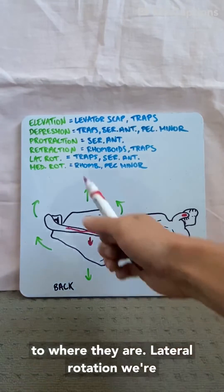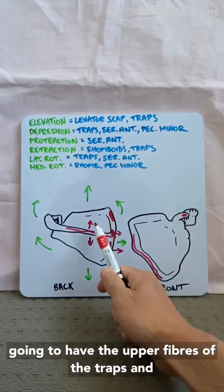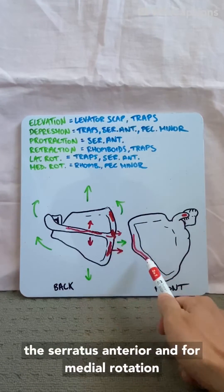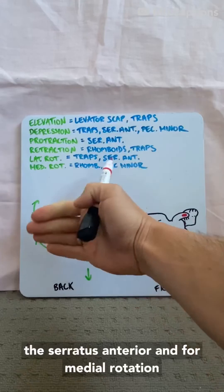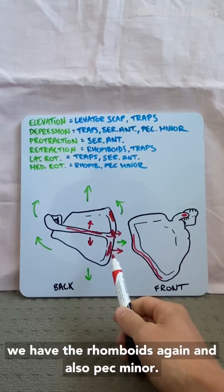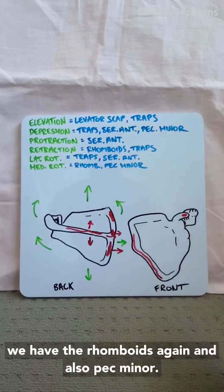For lateral rotation, we're going to have the upper fibers of the traps and the serratus anterior. And for medial rotation, we're going to have the rhomboids again and also pec minor.